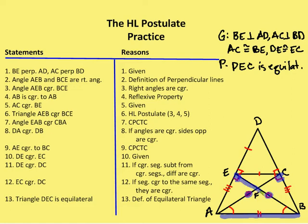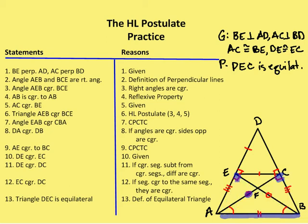So now I can say that triangle EBA is congruent to triangle CAB by the HL postulate. I have my hypotenuse, my two legs, and my right angles. By the hypotenuse leg postulate, triangle AEB is congruent to BCE. As a result, I also know that angle EAB is congruent to CBA. Then I can say that DA is congruent to DB, because if the angles are congruent, the sides opposite them are congruent.